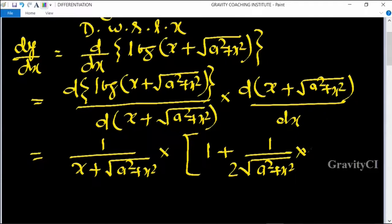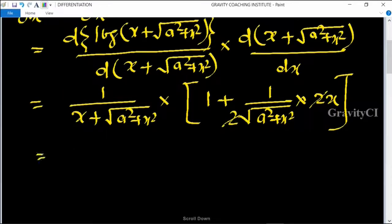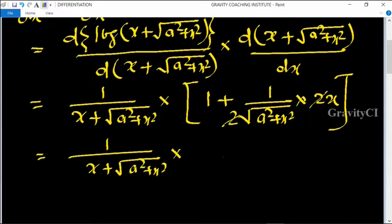Taking the derivative: a² gives zero, x² gives 2x, so that cancels. This is equal to one over (x + √(a² + x²)).